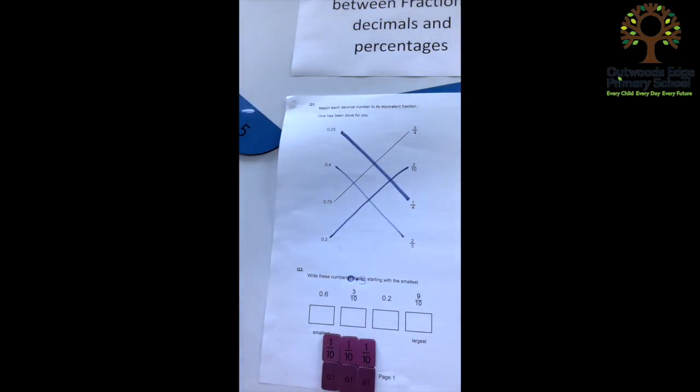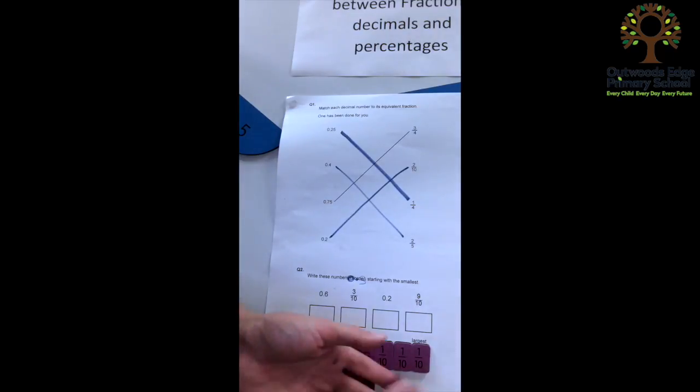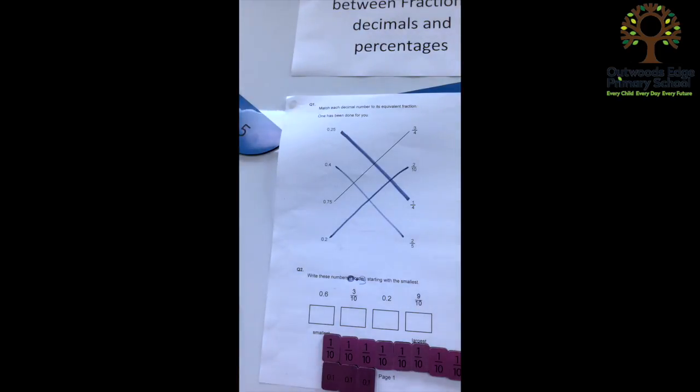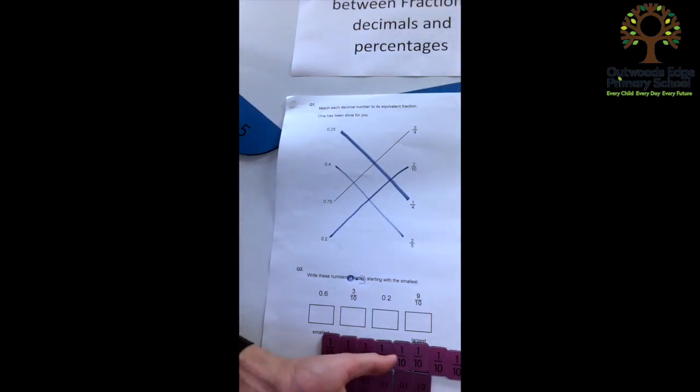And then I can do the same with 9 tenths. So I'm going to make the 9 tenths first of all. 4, 5, 6, 7, 8, 9, I can see that that is equivalent to 0.9, adding those on, trying to get them the right way up.